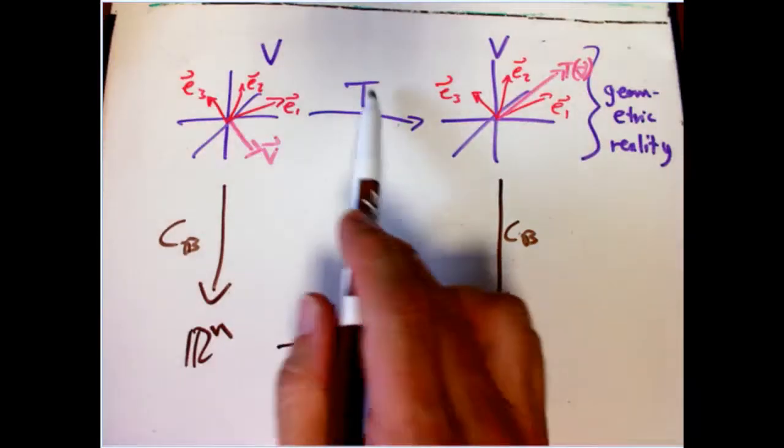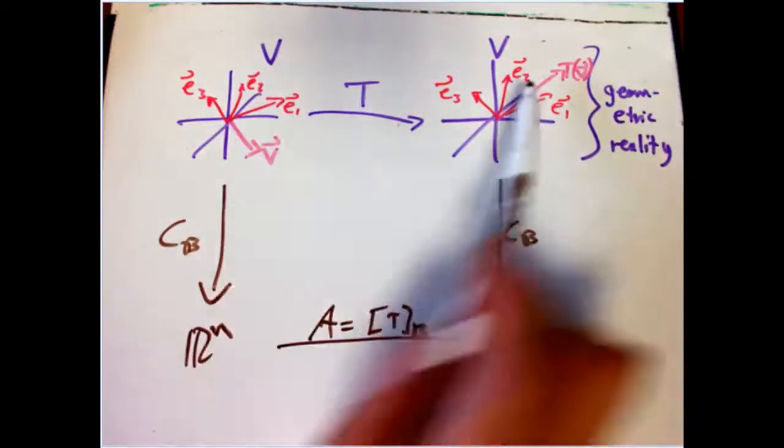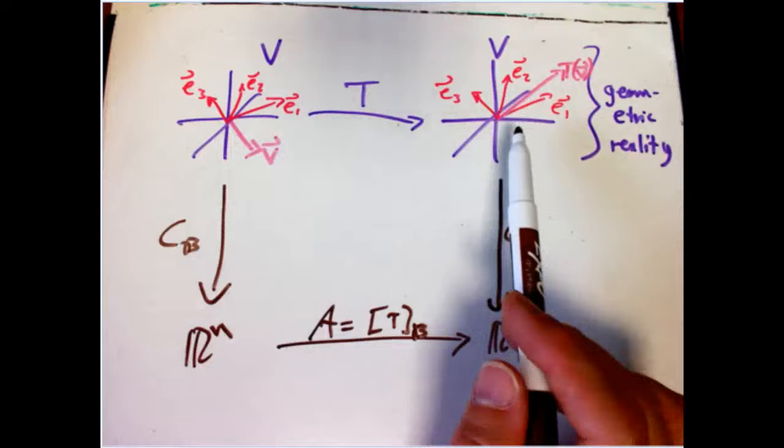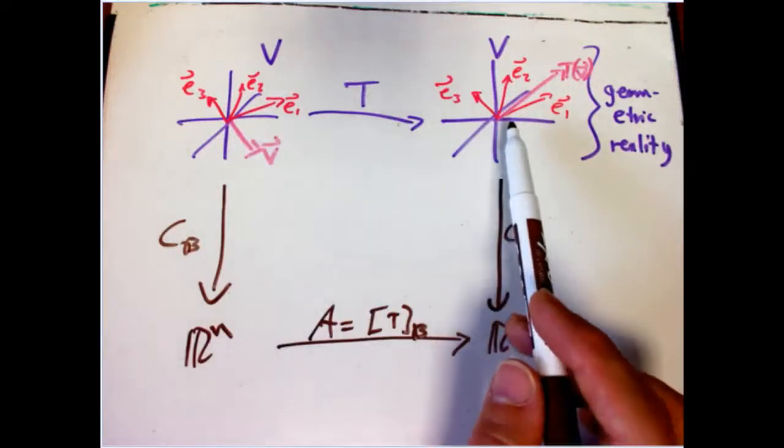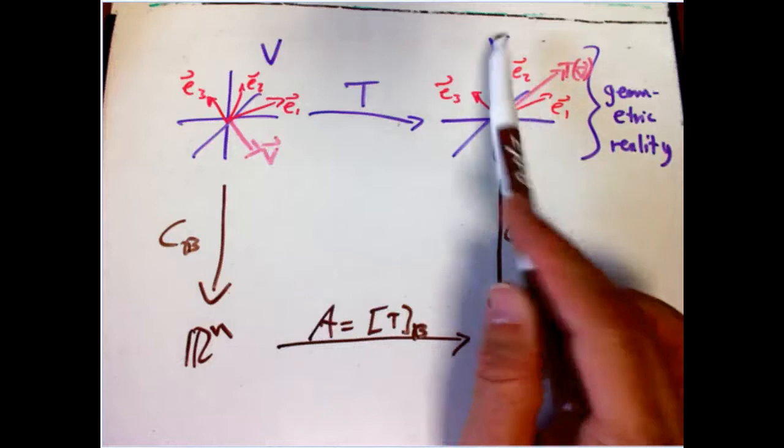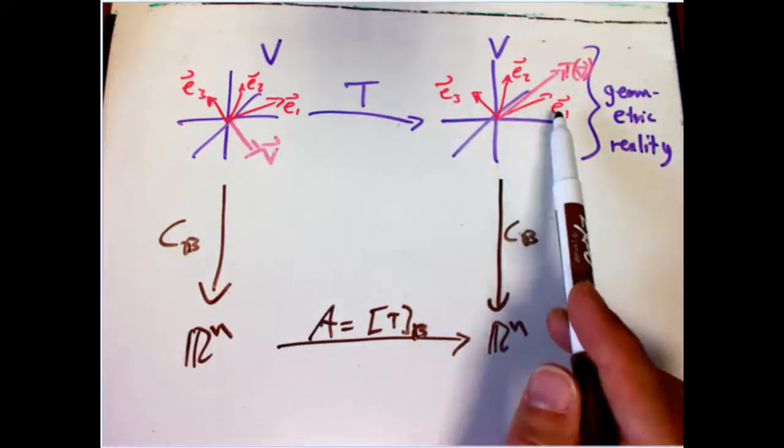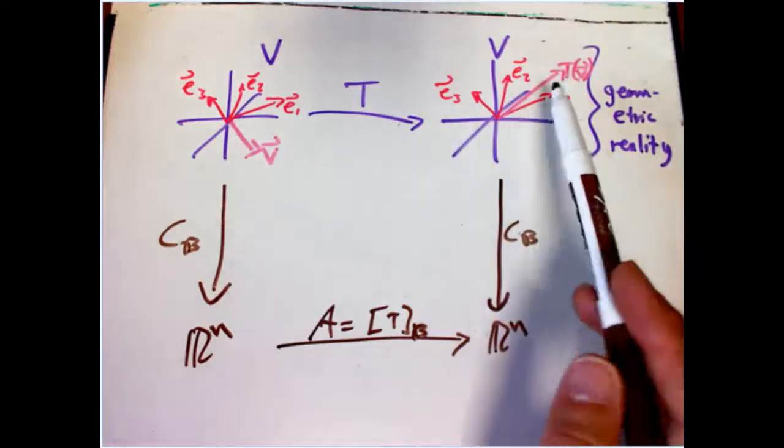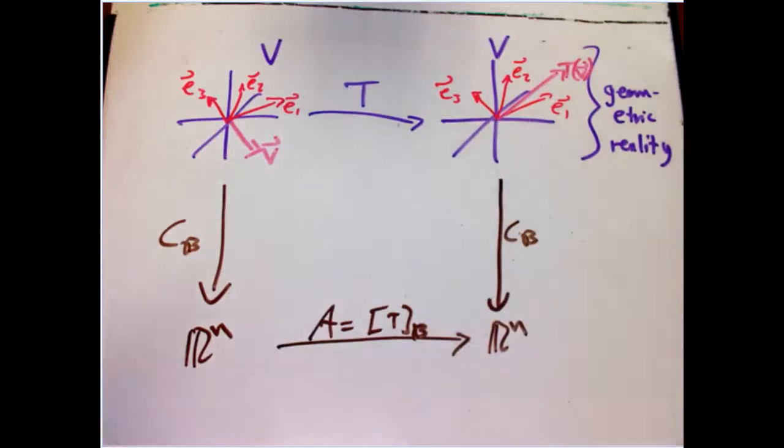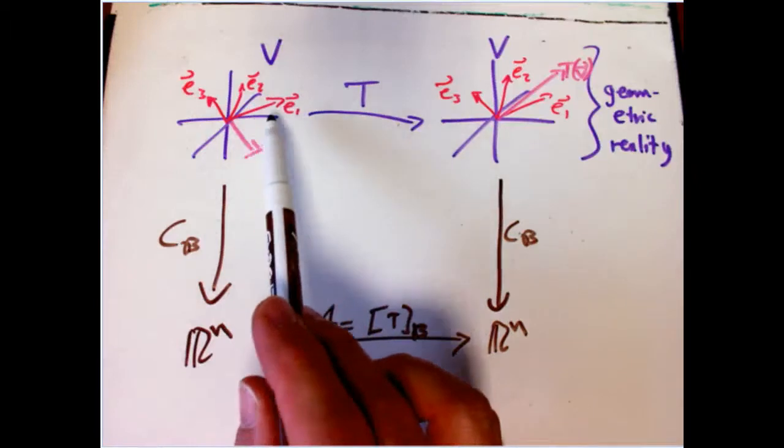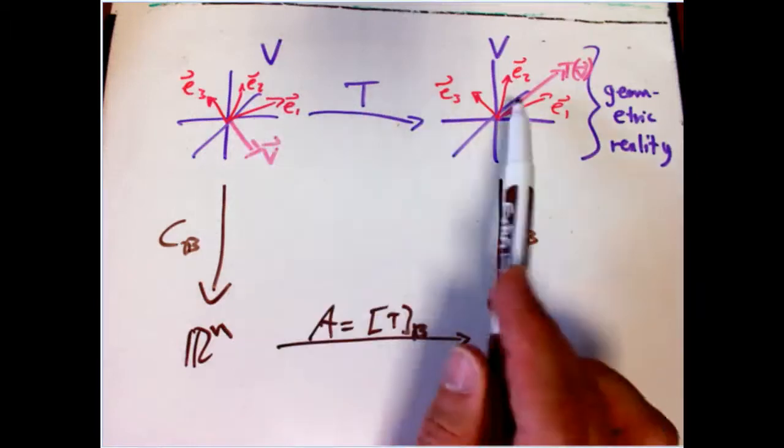And I've got a transformation, linear transformation T, from V to itself. Now, I've drawn two separate copies of V to make clear the source and the target. To be honest, the more general version of this is where this is a different vector space, different basis, obviously, because it lives in a different sort of universe. And this gets a little more complicated then. But this really encapsulates the main thing, and this is what my students need right now. So I've got this linear transformation.